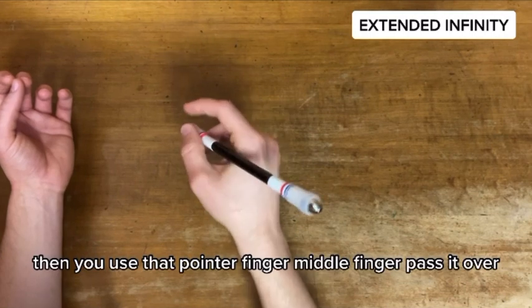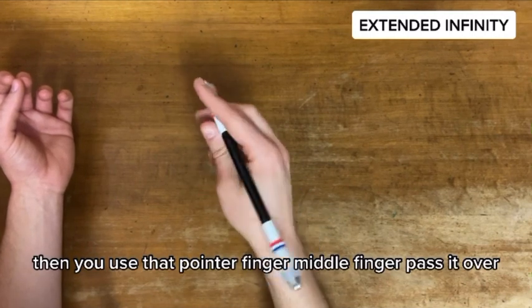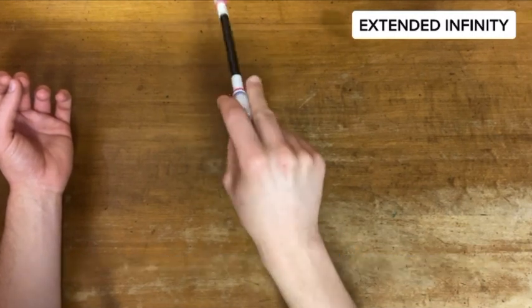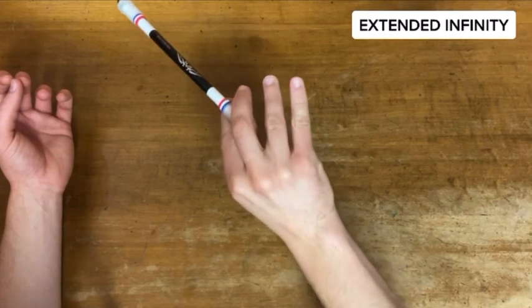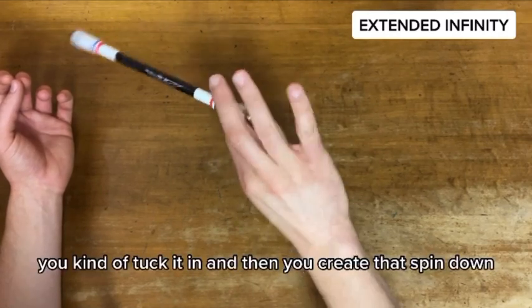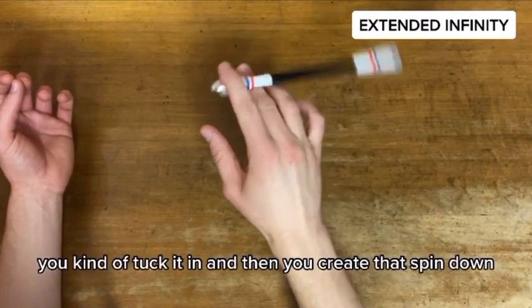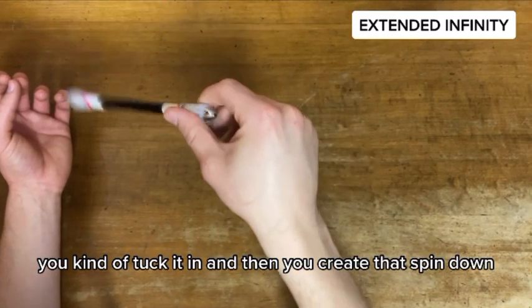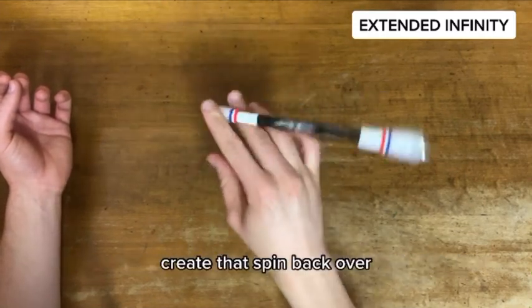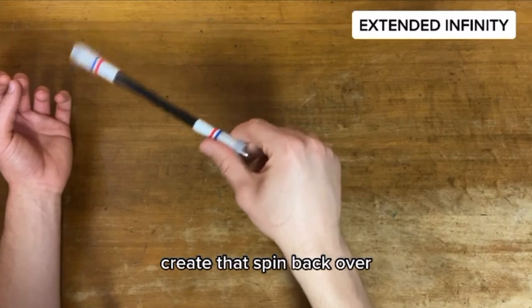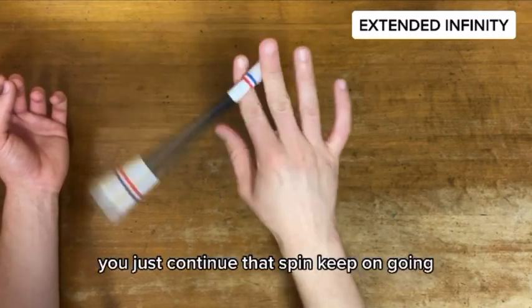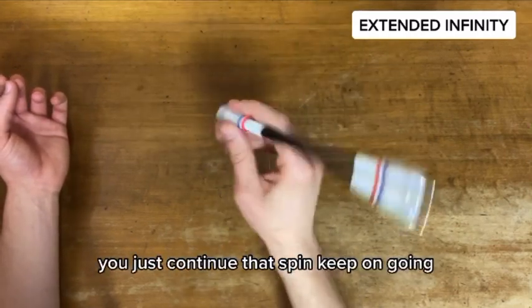And you use that pointer finger, middle finger, pass it over. You kind of tuck it in and then you create that spin down, create that spin back over. That's how you do it, you just continue that spin, keep on going.